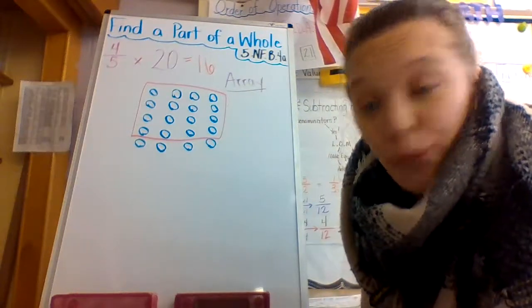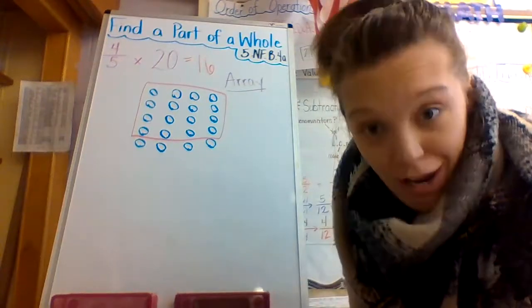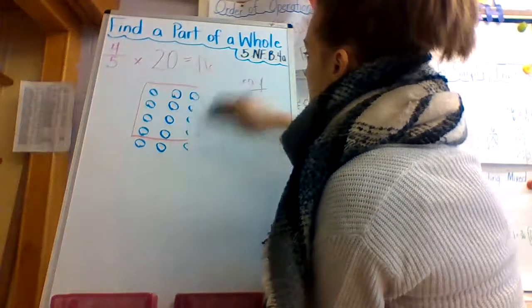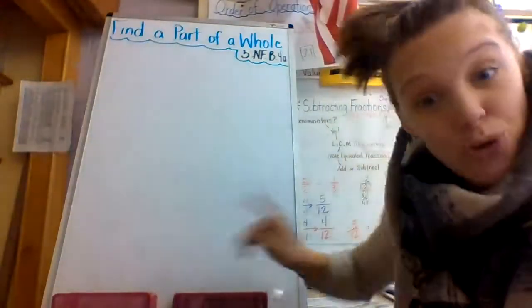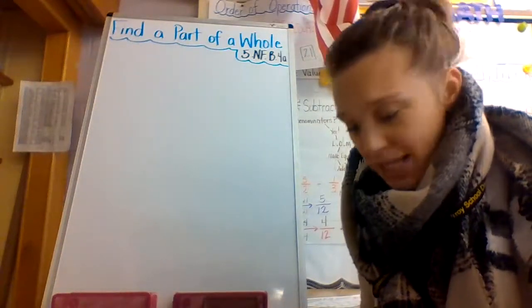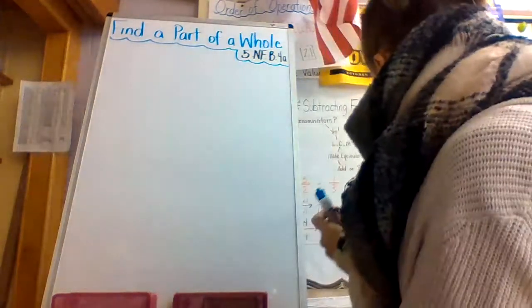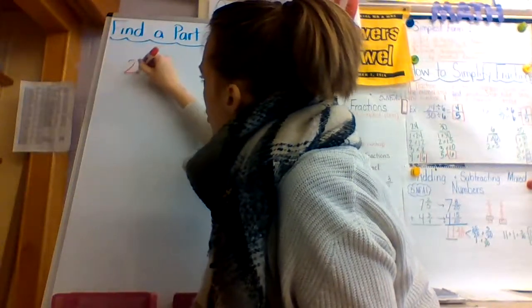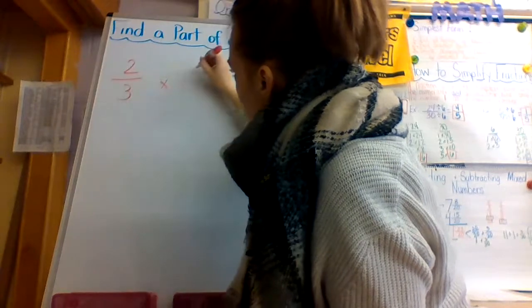That's all you got to do. I'm going to do one more example for you before I sign off and drive home in this crazy snow. We're going to use the same strategy of using an array. My scholars who were here today were like, oh my gosh, Mrs. Bauer, is this so easy? I love this strategy. Let's do two thirds of 12. Okay, let's do two thirds times 12.